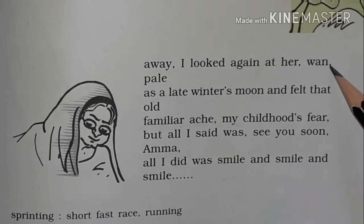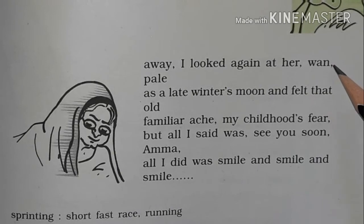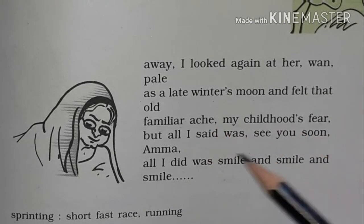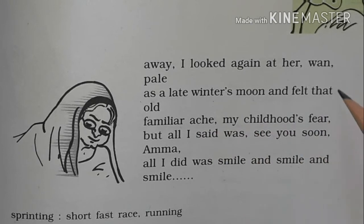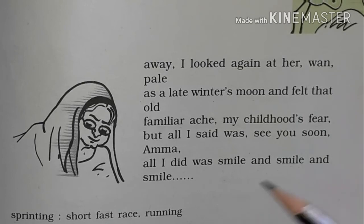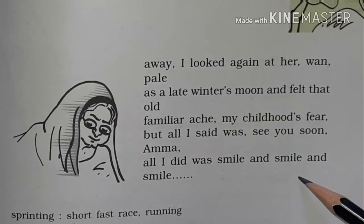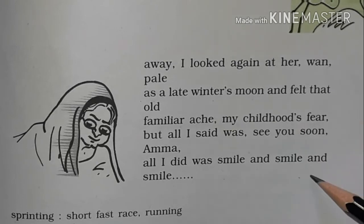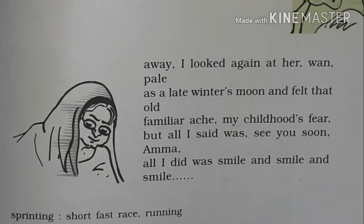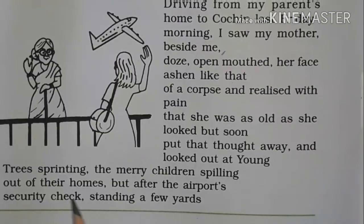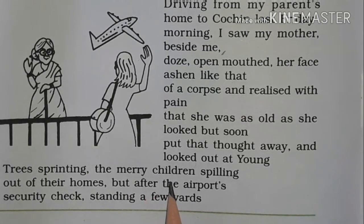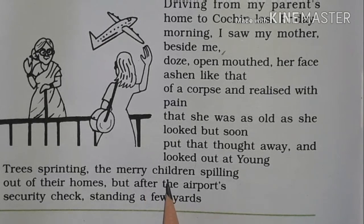Regarding the rhyming scheme, the end words — 'old,' 'fear,' 'soon,' 'ama' — all have different sounds, so there is no rhyming scheme. This is called free verse or blank verse. Additionally, the trees, young trees, merry children, and the winter's moon are used as poetic devices of symbol and imagery.